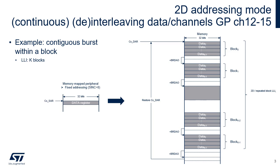At the end of the transfer, when K blocks will have been transferred, the C-X-DAR register, which points to the beginning of the first buffer, can be automatically restored in order to implement circular buffers. This automatic restoration requires a link operation. In this example, bursts are placed contiguously in memory, so the burst destination address offset set in the BDRA0 field of the CX-TR3 register must be null.